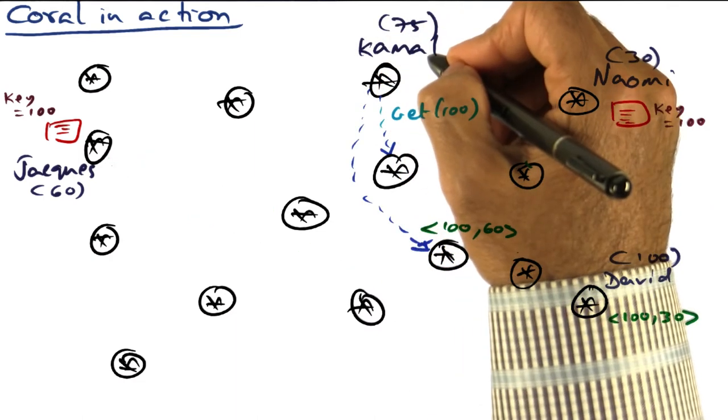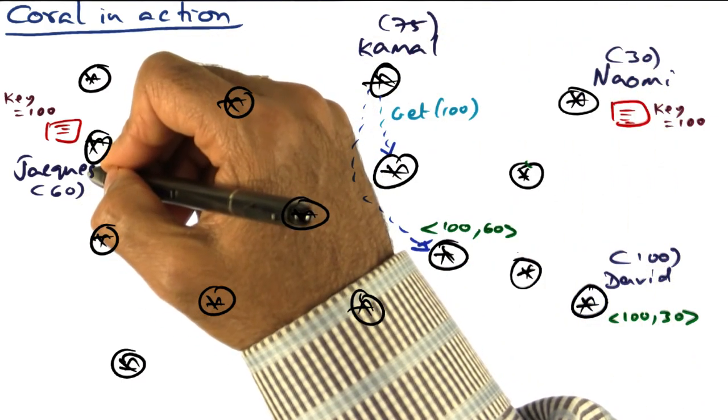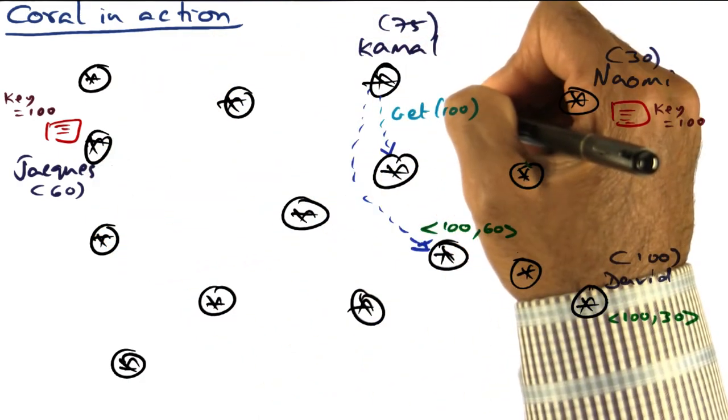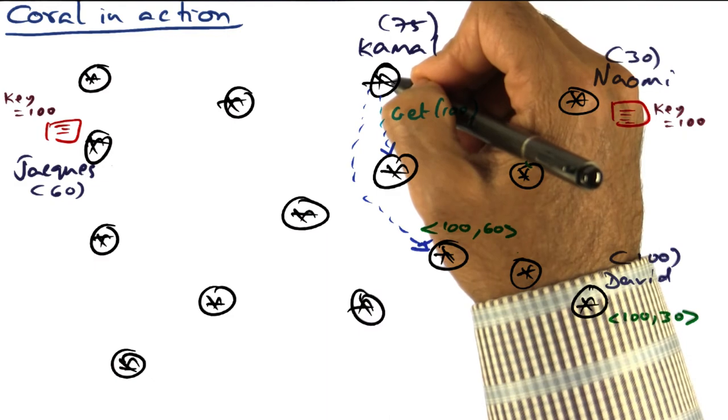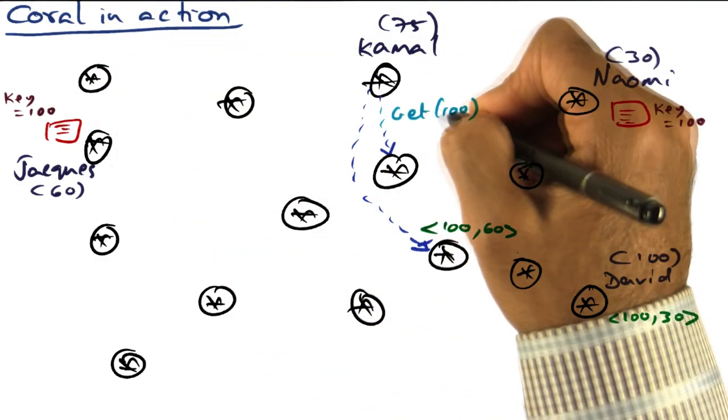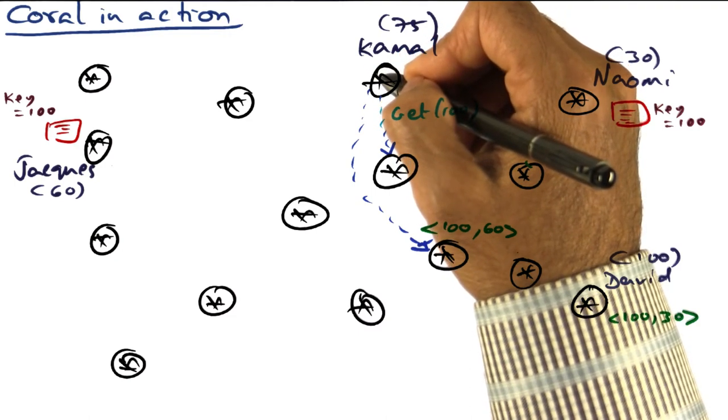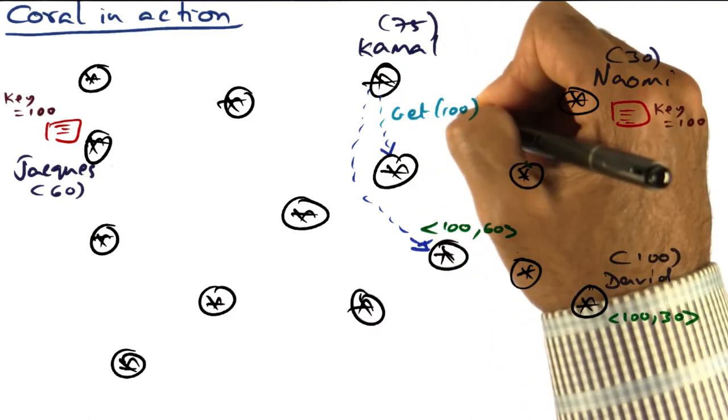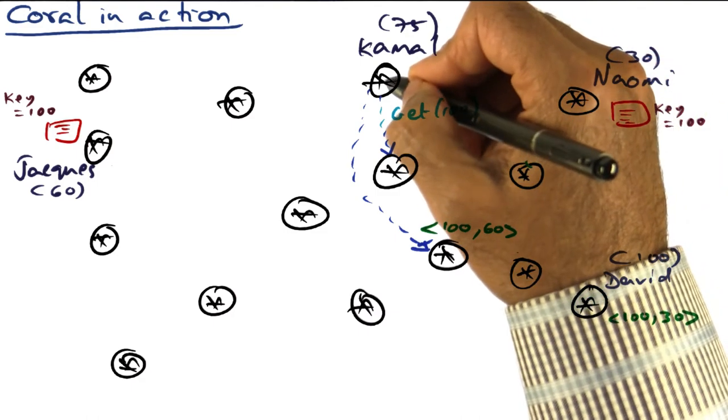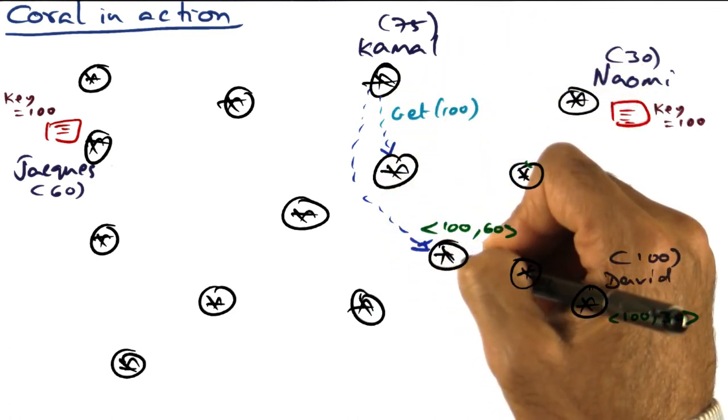Now, if a third guy, Kamal, comes to know about this cool video that is now propagating on the internet, and he finds that the key for that is 100, he can once again query the Coral system for that video. And he is following the same key base routing algorithm of Coral and trying to get towards David's node, which is node 100. So he's going to follow that. But when he does that, he hits this intermediate node.